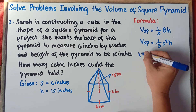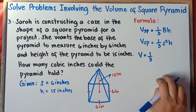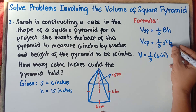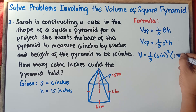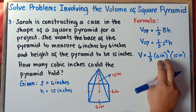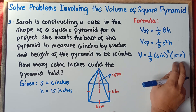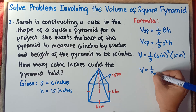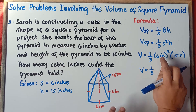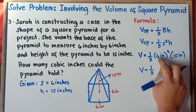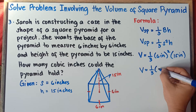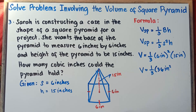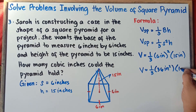Using the second formula: volume equals one-third times S squared times height. Substitute the values: volume equals one-third times 6 inches squared times 15 inches. Simplify the exponent first — 6 squared means 6 times 6, which equals 36. Inches times inches gives square inches. So we have one-third times 36 square inches times 15 inches.